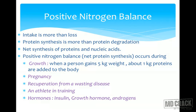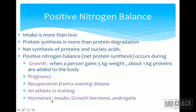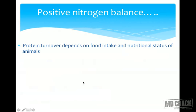Other conditions of positive nitrogen balance include pregnancy — protein synthesis must occur for the fetus to grow — and convalescence, where the body is recuperating from a wasting disease. An athlete in training is also given a high-protein diet because during training protein synthesis is taking place, so intake has to be more. The hormones responsible for positive nitrogen balance are insulin, growth hormone, and androgens.